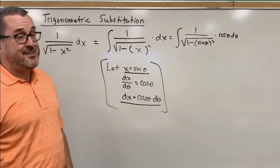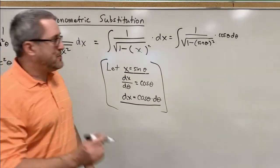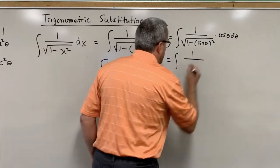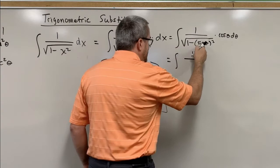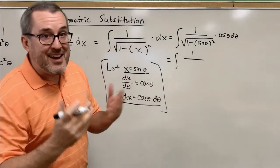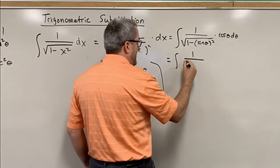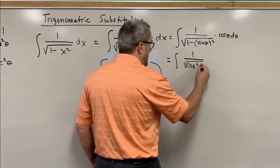Now maybe you're wondering, how does that make things any better? Well just hold on, watch this. There's a couple of really awesome things that happen now. Awesome thing number one: one minus sine of theta squared. We have an identity for that. Recall that one minus sine of theta squared is the same thing as cosine squared.